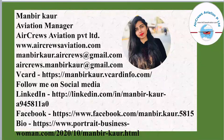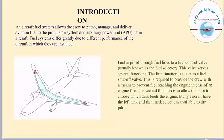Let's get started with today's topic. An aircraft fuel system allows the crew to pump, manage, and deliver aviation fuel to the propulsion system and auxiliary power unit (APU) of an aircraft. Fuel systems differ greatly due to the different performance of the aircraft in which they are installed. Fuel is piped through fuel lines to a fuel control valve.